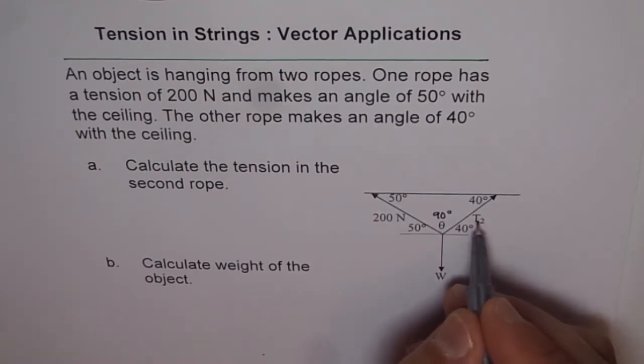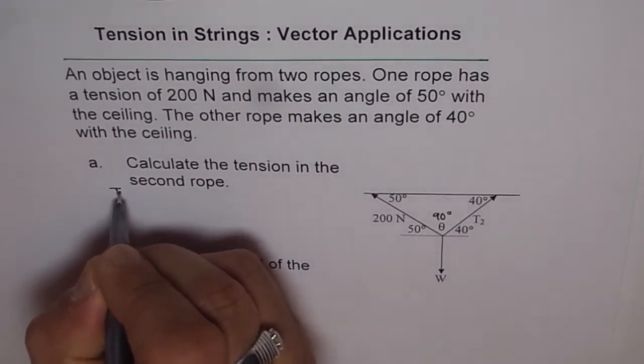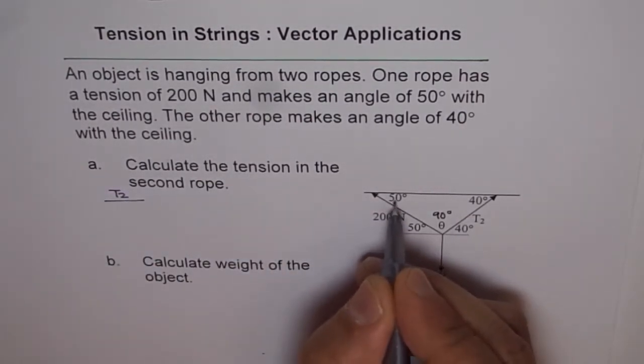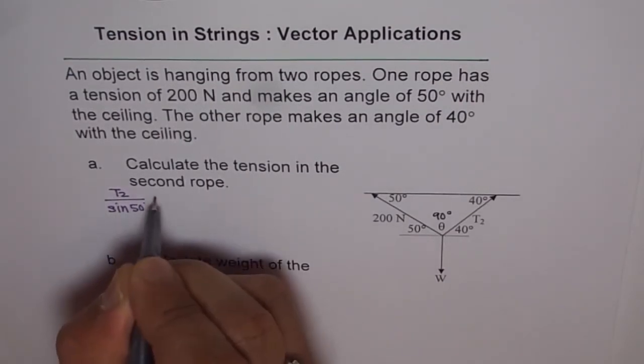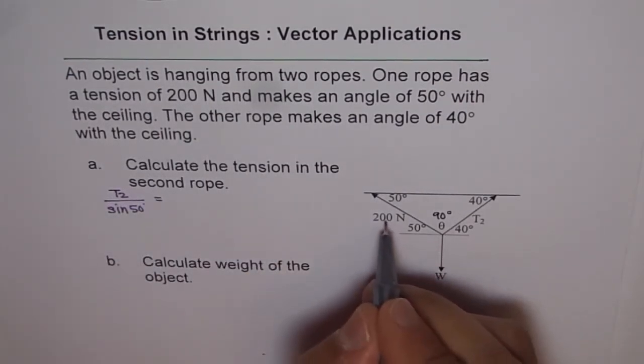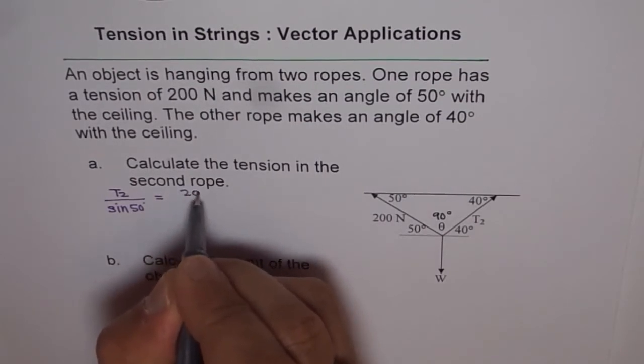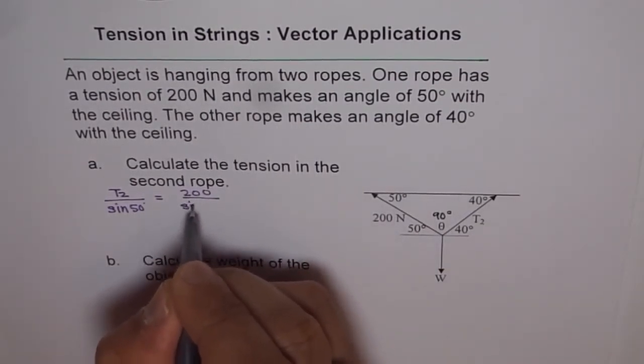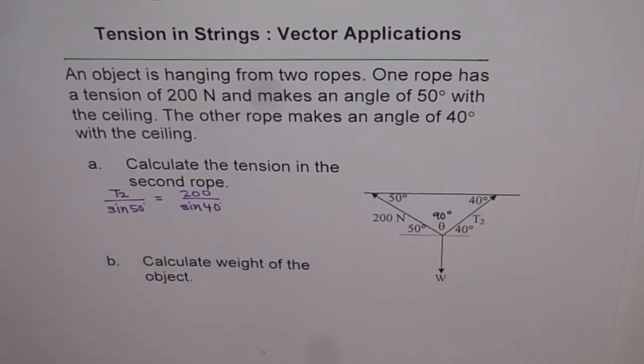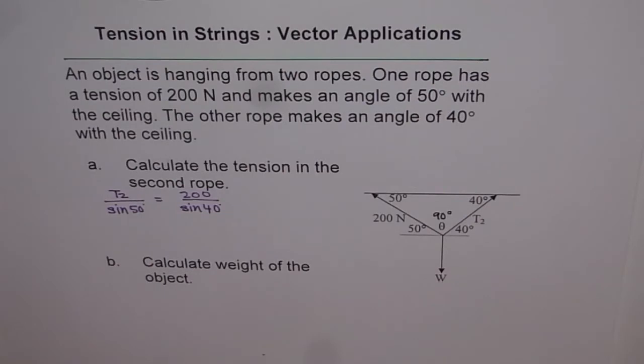We can say T2 over sine of 50 degrees is equal to 200 over sine of 40 degrees. From here, we can calculate what T2 is.